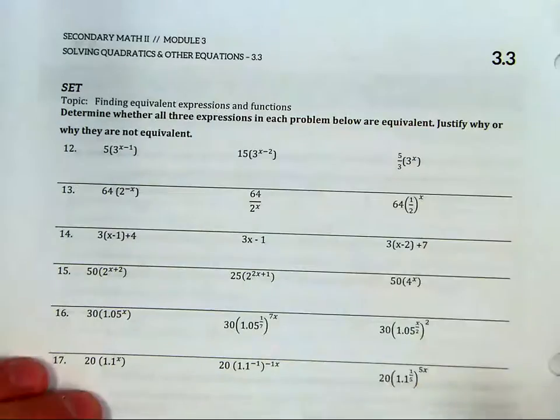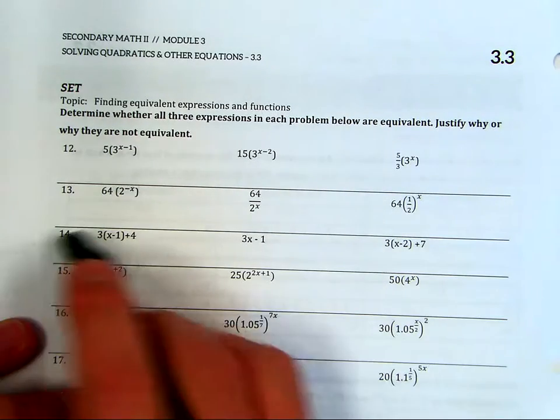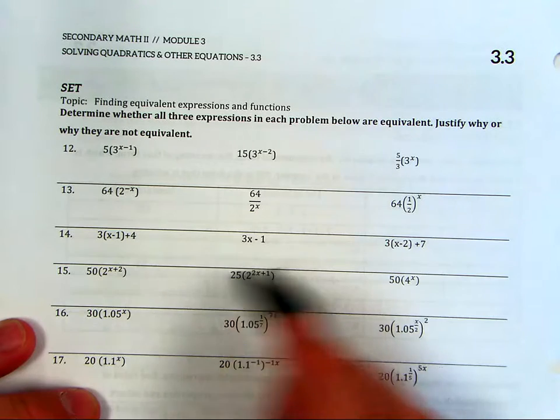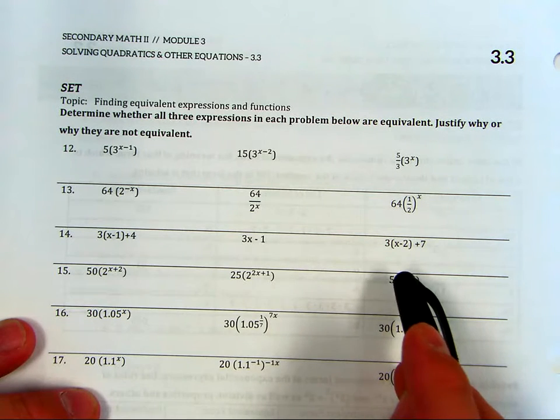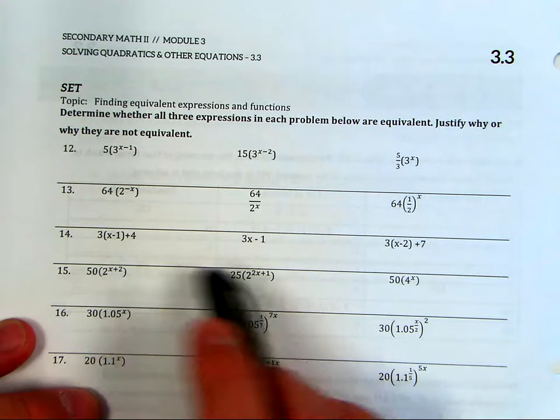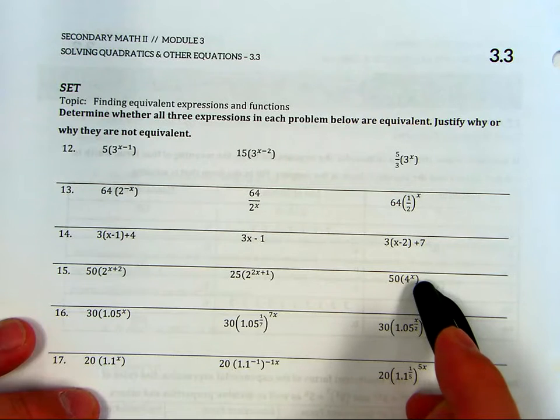You need to see if each one for number 14, like, are these three the same? Are they equivalent? Can you simplify them to be the same thing? Same thing with 15. Are those three the same thing? Can you simplify them?